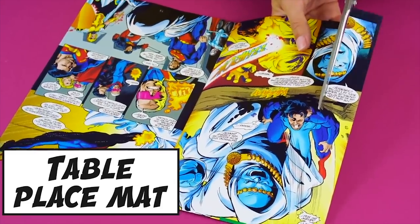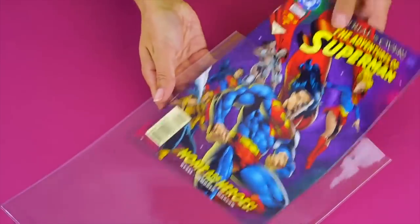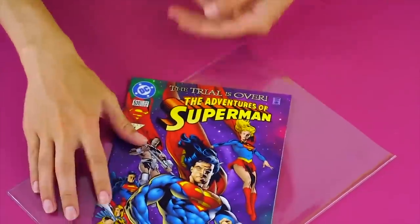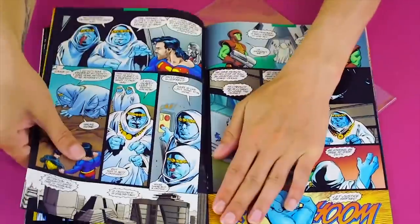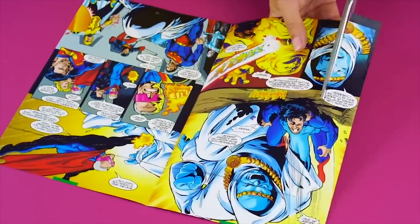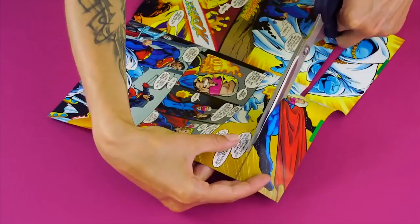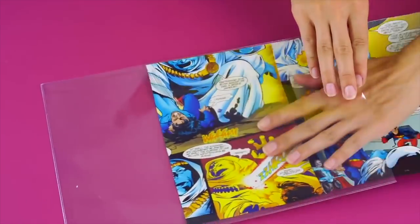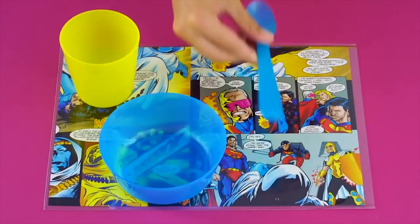Table placemat. Here's a way to add some fun to your dining experience. Pull out your favorite comic book and open it up to the middle. Carefully remove the center pages. Cut it to fit your clear page protector and slide it in. Now you've got a cool placemat!